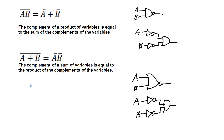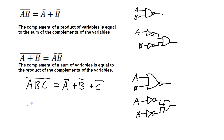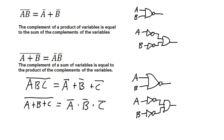De Morgan's theorems can also be applied to more than two variables. So if I have A, B, and C all inverted, that's the same as A inverted ORed with B inverted ORed with C inverted. And similarly, A or B or C inverted is equal to A inverted ANDed with B inverted ANDed with C inverted.